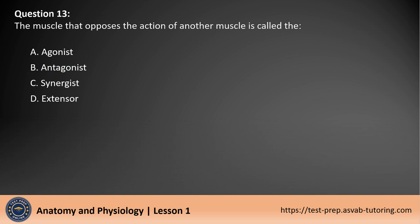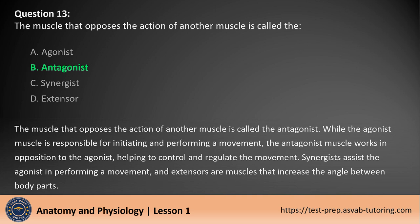Question 13. The muscle that opposes the action of another muscle is called the: A. Agonist. B. Antagonist. C. Synergist. D. Extensor. The answer is B. The muscle that opposes the action of another muscle is called the antagonist. While the agonist muscle is responsible for initiating and performing a movement, the antagonist muscle works in opposition to the agonist, helping to control and regulate the movement. Synergists assist the agonist in performing a movement, and extensors are muscles that increase the angle between body parts.